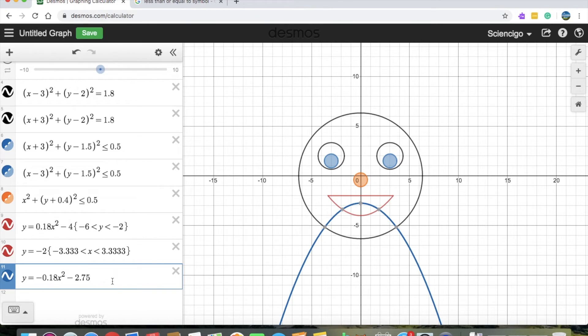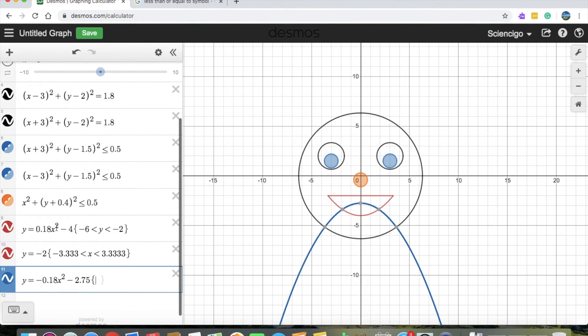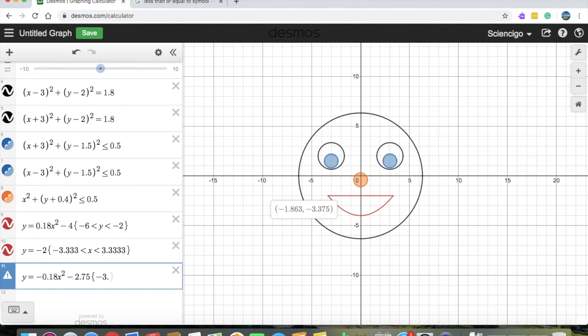Now we don't want it extended. So we put our curly brackets on and set the values. This will be negative 3.375 as it says here, which should be less than y. And y should be less than some other value which will be a positive 3.37. And close the brackets. There. We just got a smiley face. We can turn its color to red as well. So that it all looks good.